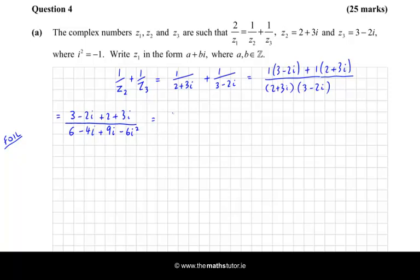Let's simplify the top, and I get 5 plus i. Simplify the bottom. Now minus 6i squared is minus 6 by minus 1, so that's plus 6. If I add plus 6 to the other 6, I get 12. And add my 2i terms, and I get plus 5i. So now I have a single fraction on the right-hand side.